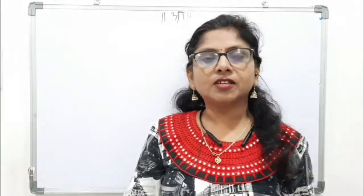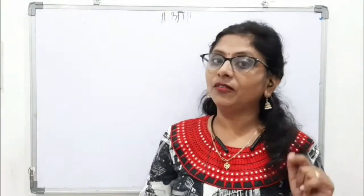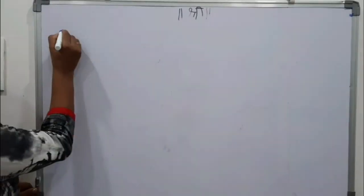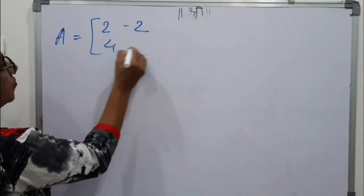So let us first come to 2 by 2 matrix and later on we will discuss 3 by 3 matrix. The matrix is A equals [2, -2; 4, 3].